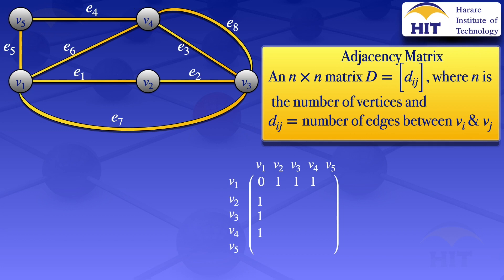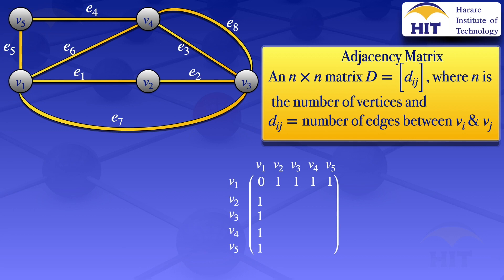Between v1 and v5, there is one edge, e5, so we put a one at v1,v5 and also at v5,v1, since the number of edges between v5 and v1 is the same.